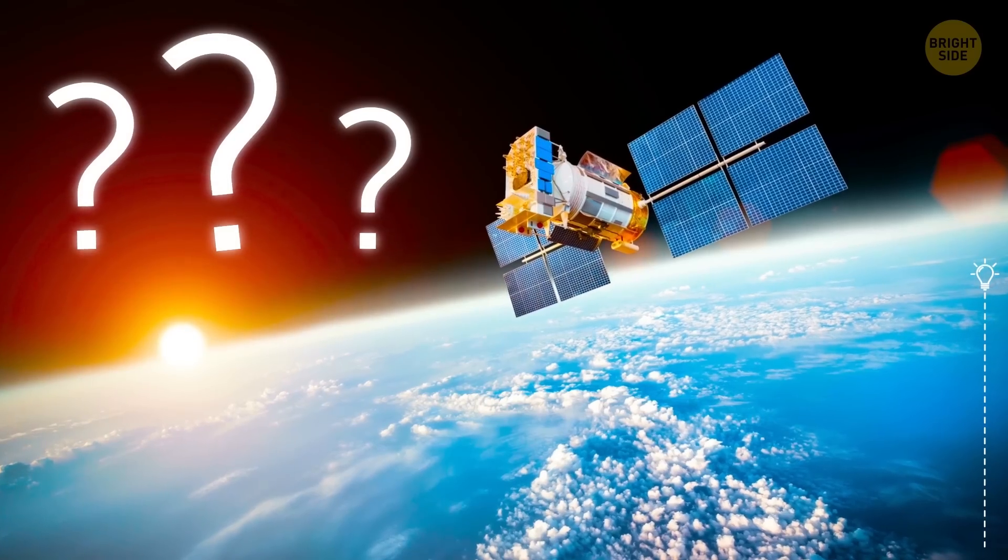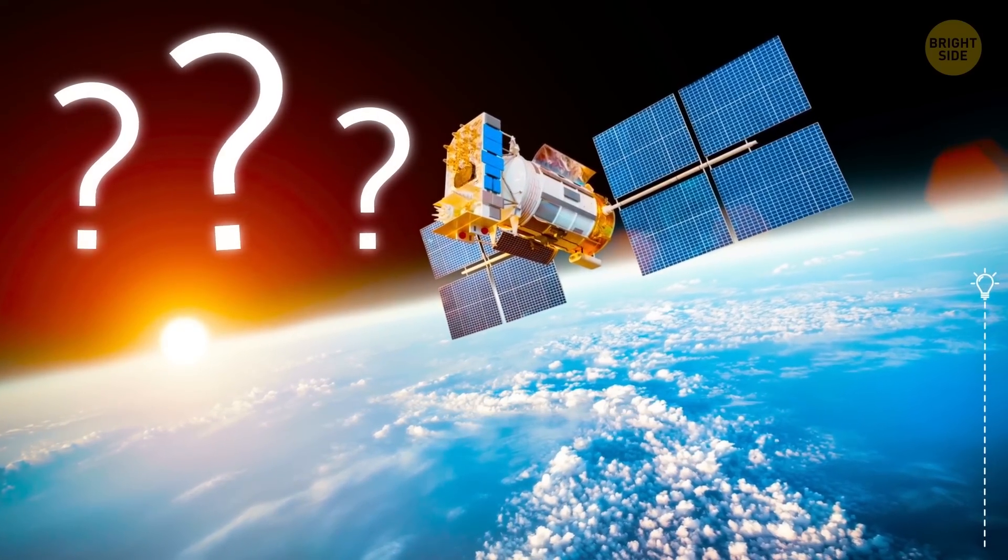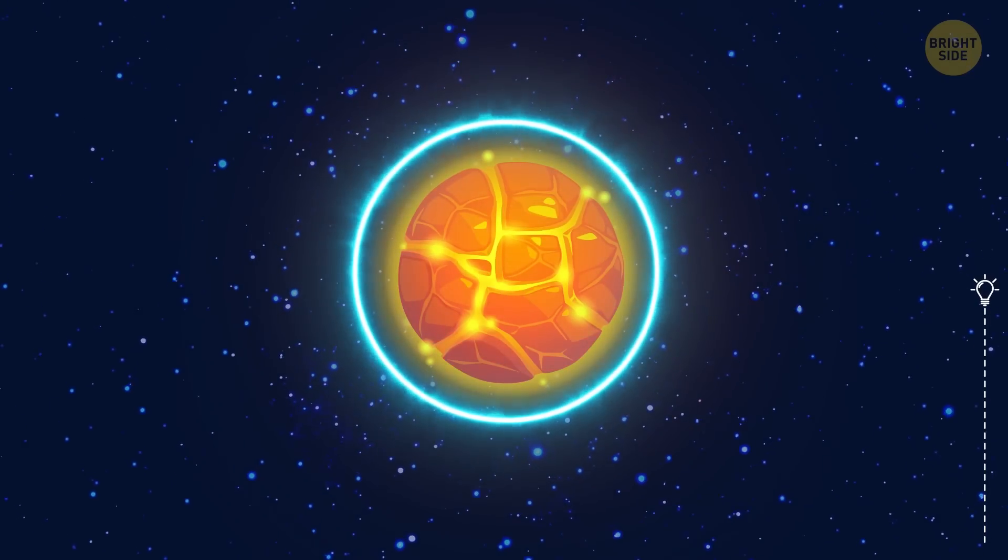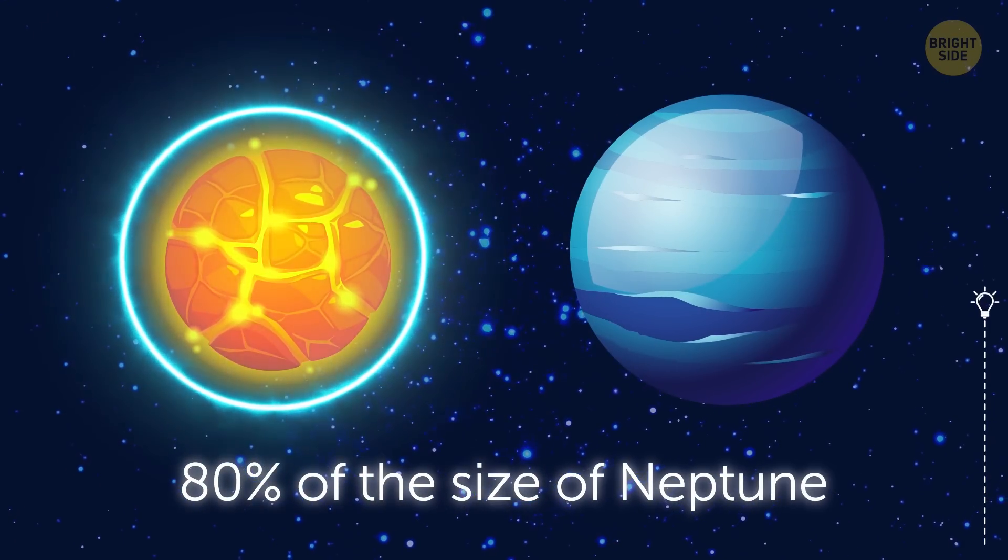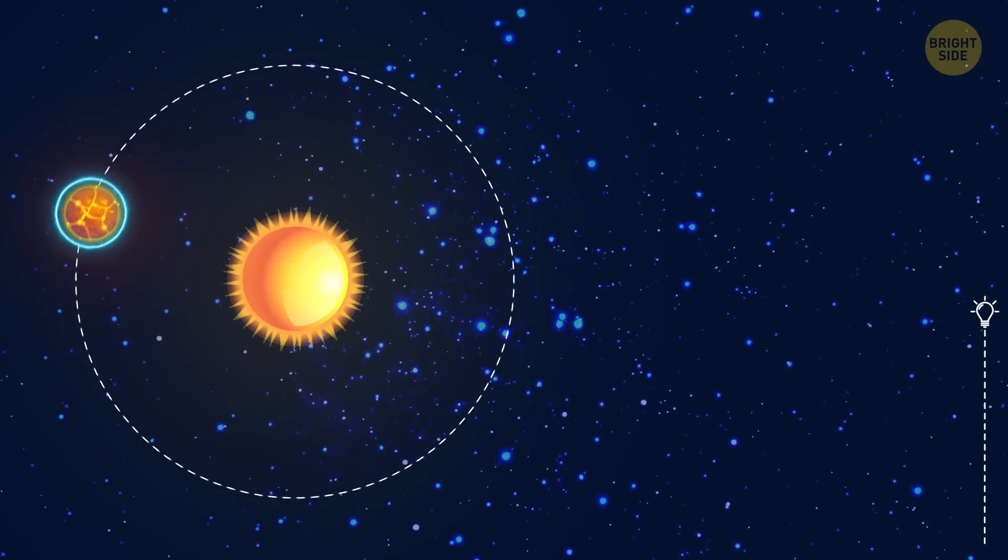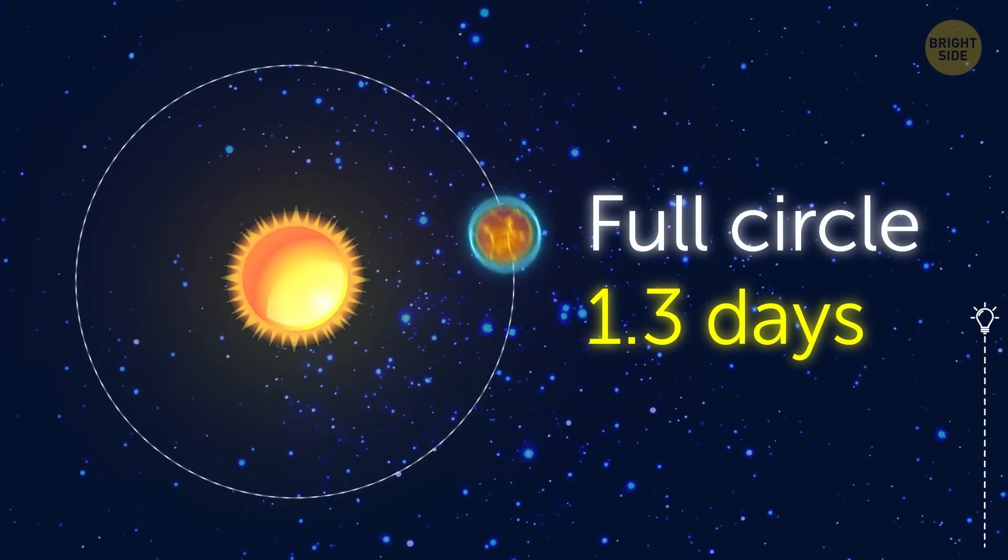Scientists can only guess why this didn't happen to NGTS-4b. This planet still has an atmosphere, and it's about 80% of the size of Neptune. It orbits the star at an astonishing speed, a full circle in 1.3 days.